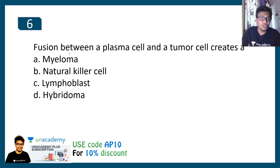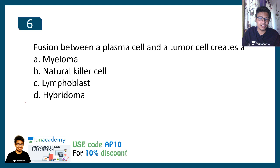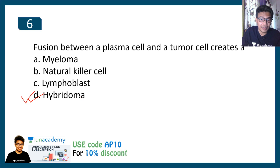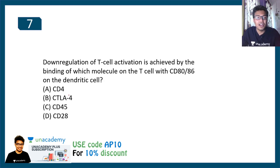The next question: fusion between a plasma cell and a tumor cell creates — A) a myeloma, B) natural killer cell, C) lymphocyte, D) hybridoma. The correct answer is hybridoma. The hybridoma technique is used to generate monoclonal antibodies and is very important for research. The concept link is given in the I button.